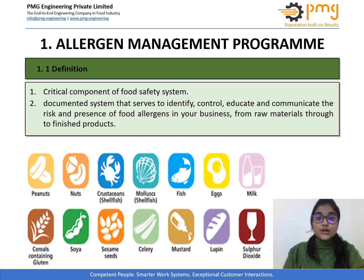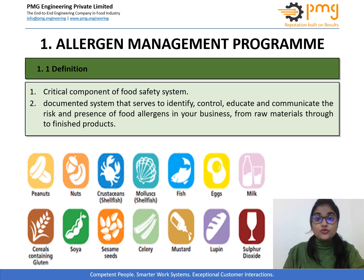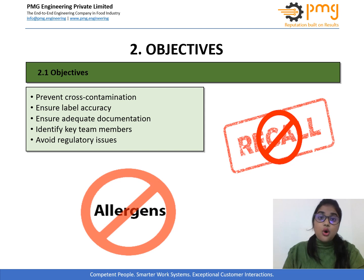Basically, a food allergen management program is an integrated part of food safety assurance strategies, which is defined as a documented system that serves to identify, control, educate and communicate the risk about presence of food allergens in your business, and it must include all stages involved in the food production chain. The main objective of an allergen control and management plan is to prevent cross-contact between allergenic and non-allergenic food runs.